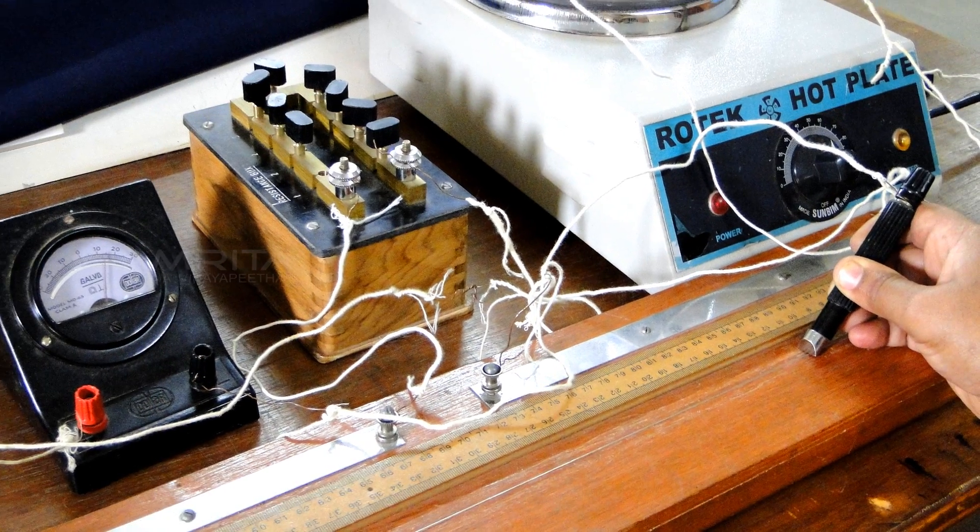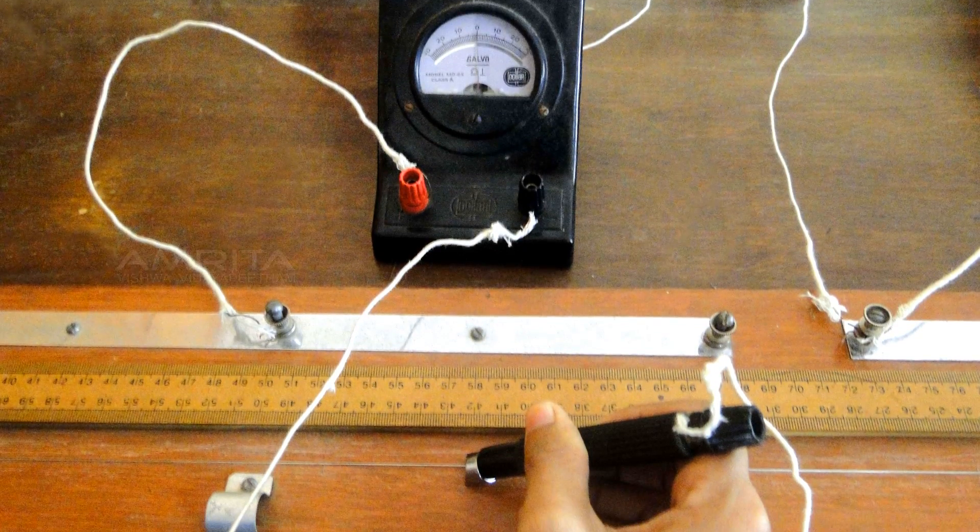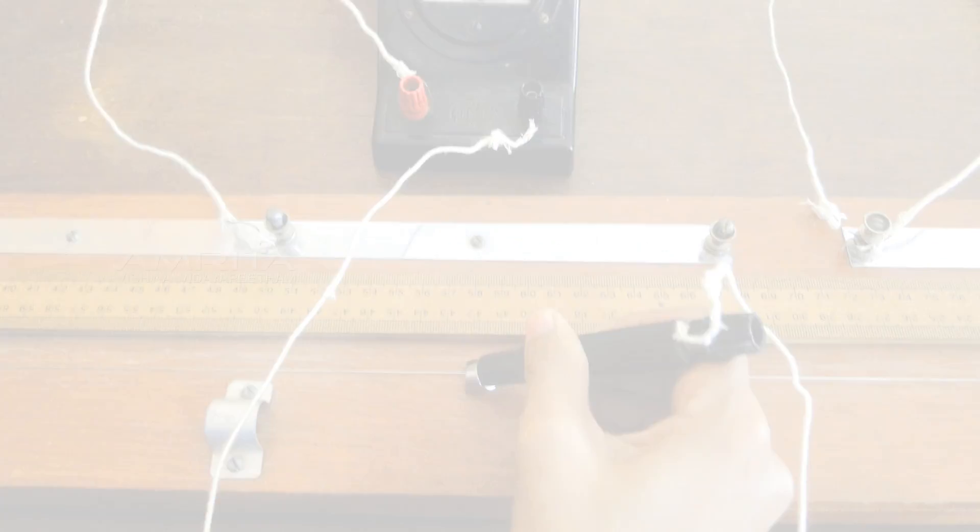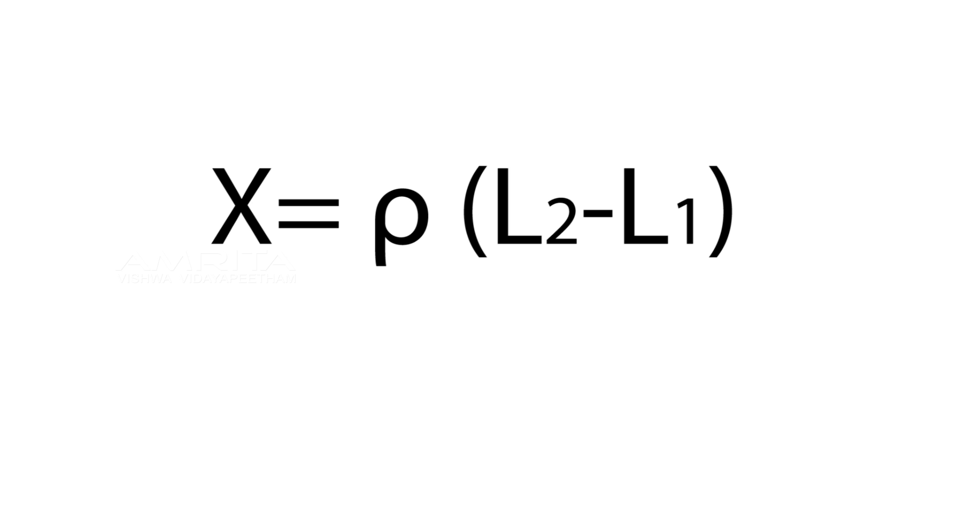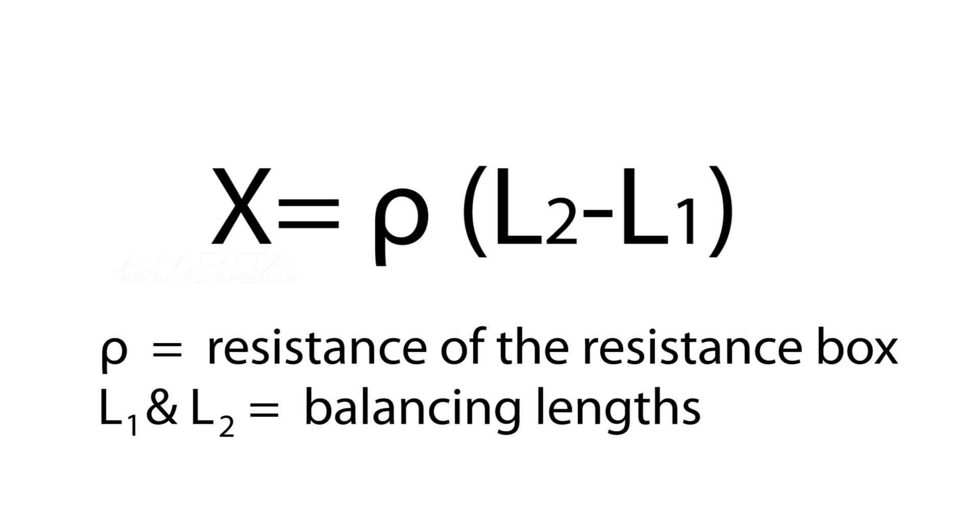Repeat the same procedure of finding the balancing lengths L_1 and L_2. Apply rho, L_1, and L_2 of the current circuit in the equation and find out the resistance of the unknown. It is the resistance at room temperature. Change the temperature and repeat the steps to find out the resistance at the changed temperature.